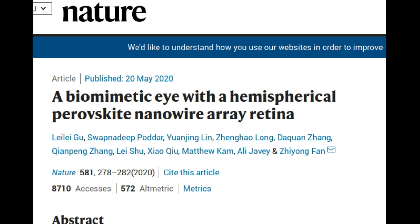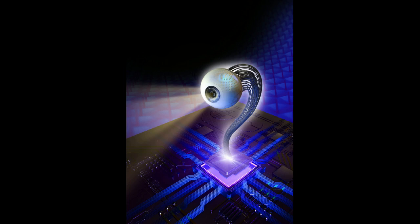Human eyes possess exceptional image-sensing characteristics such as an extremely wide field of view, high resolution, and sensitivity with low aberration. Biomimetic eyes with such characteristics are highly desirable, especially in robotics and visual prostheses. However, the spherical shape and the retina of the biological eye pose an enormous fabrication challenge for biomimetic devices.